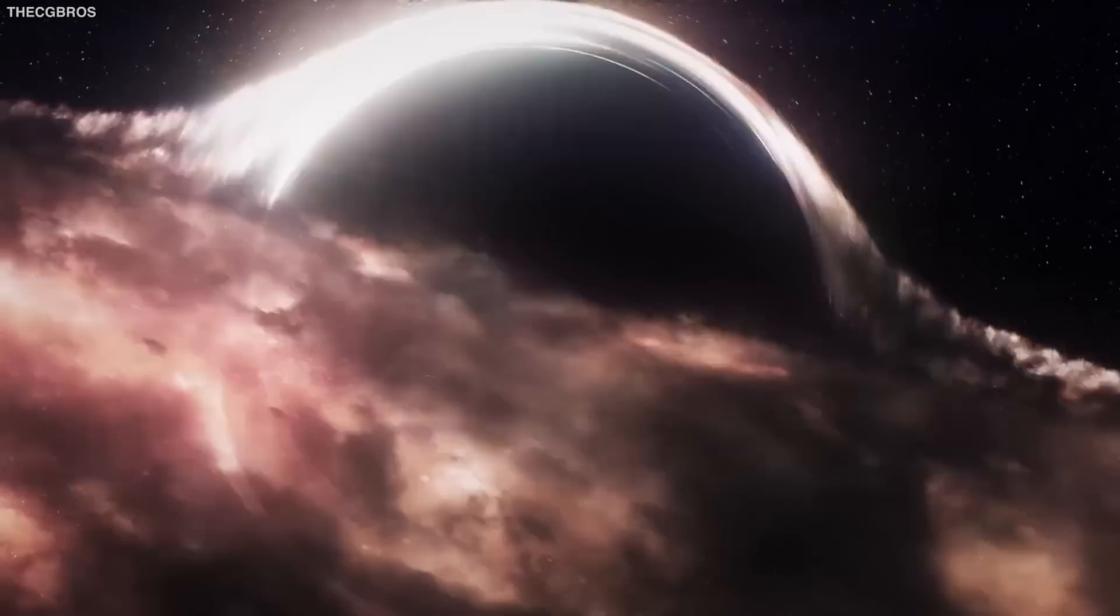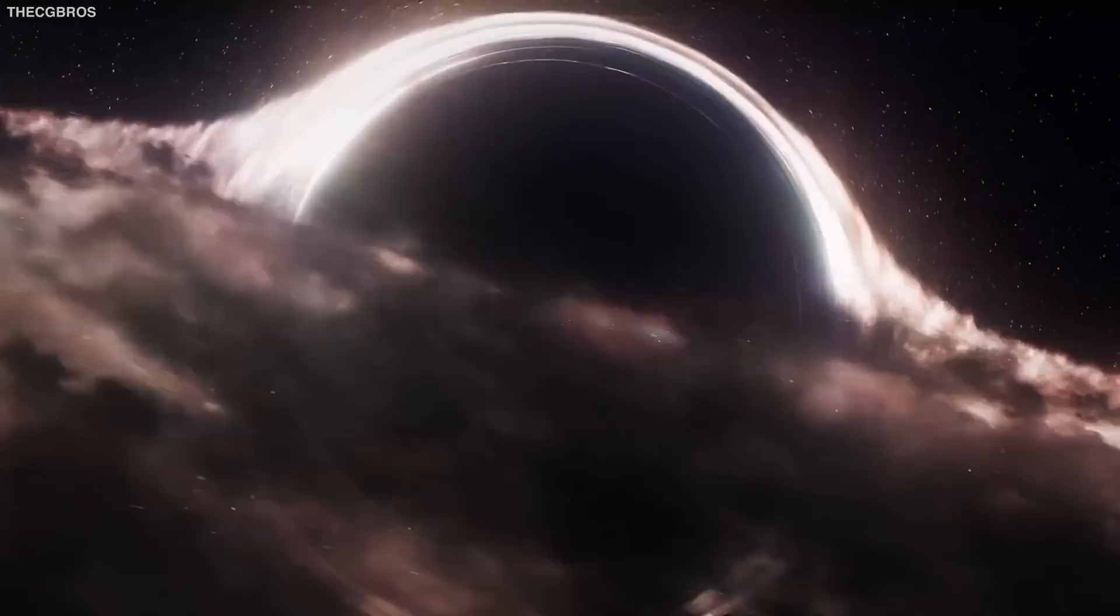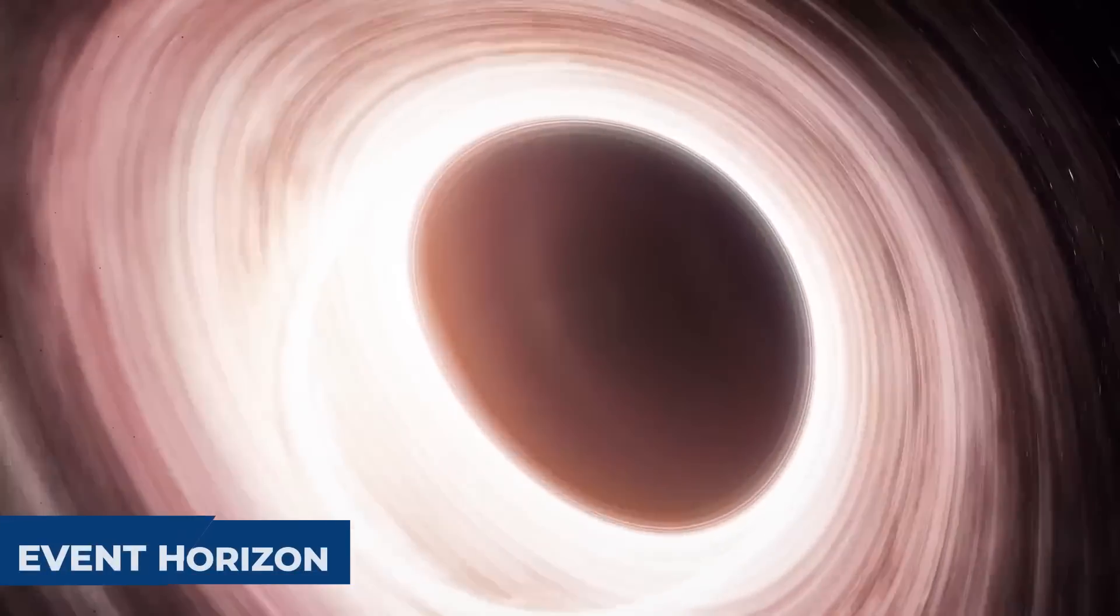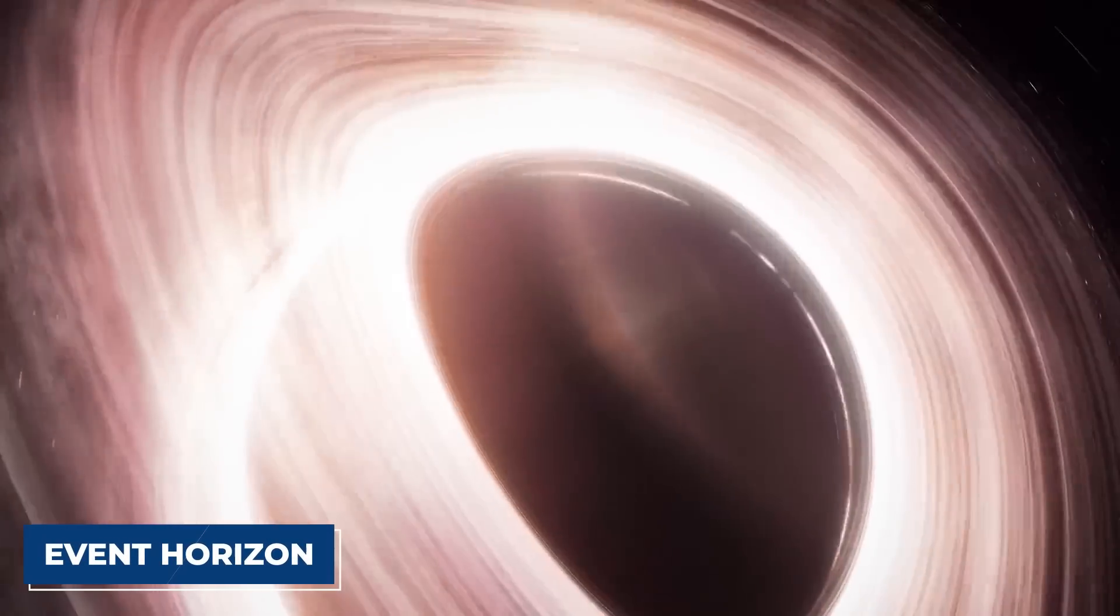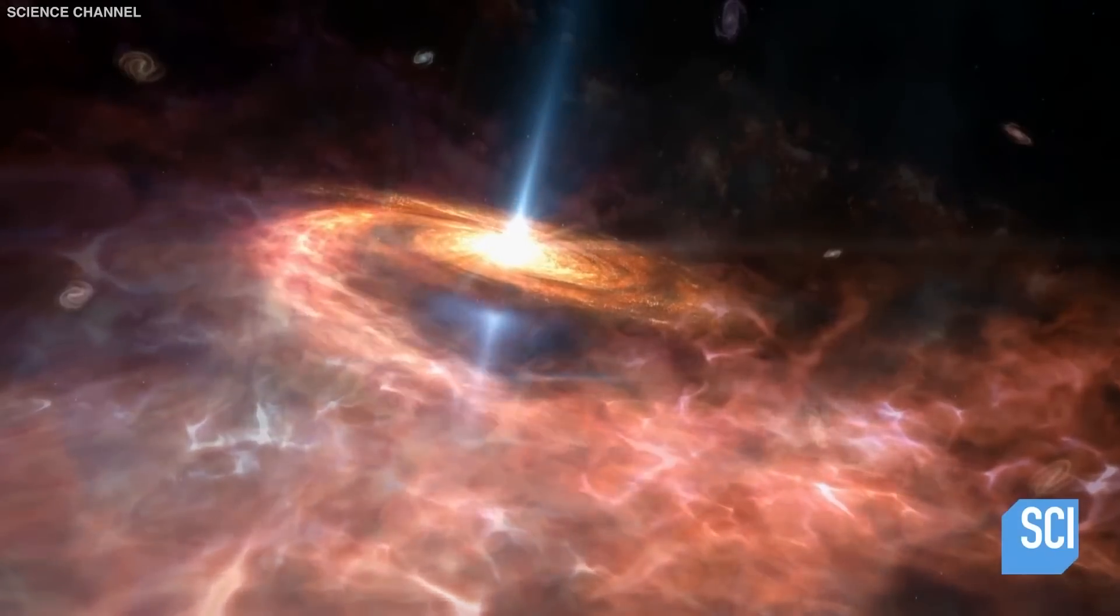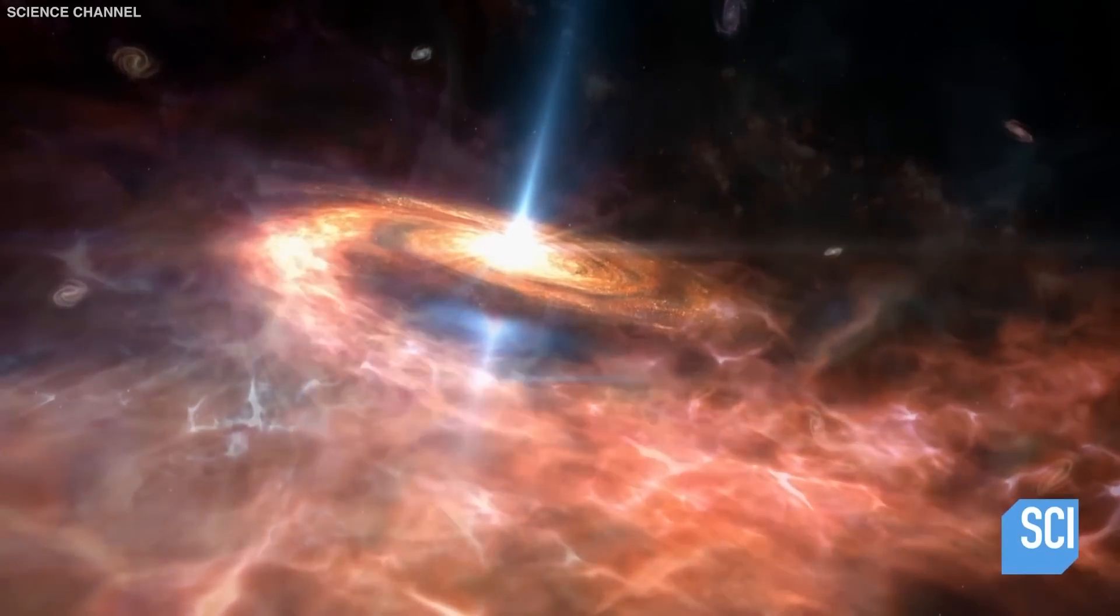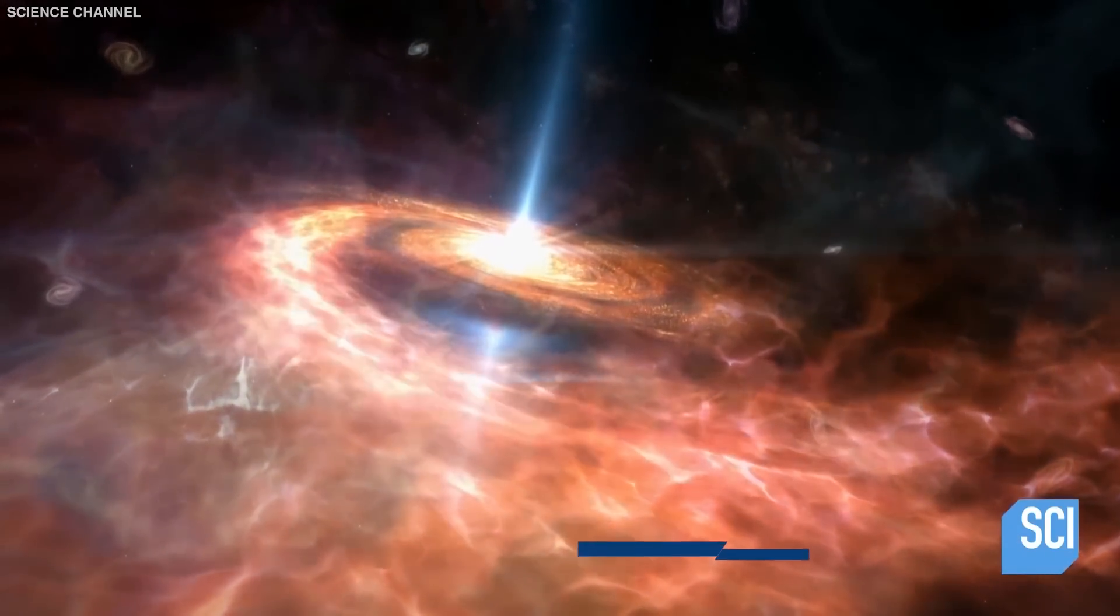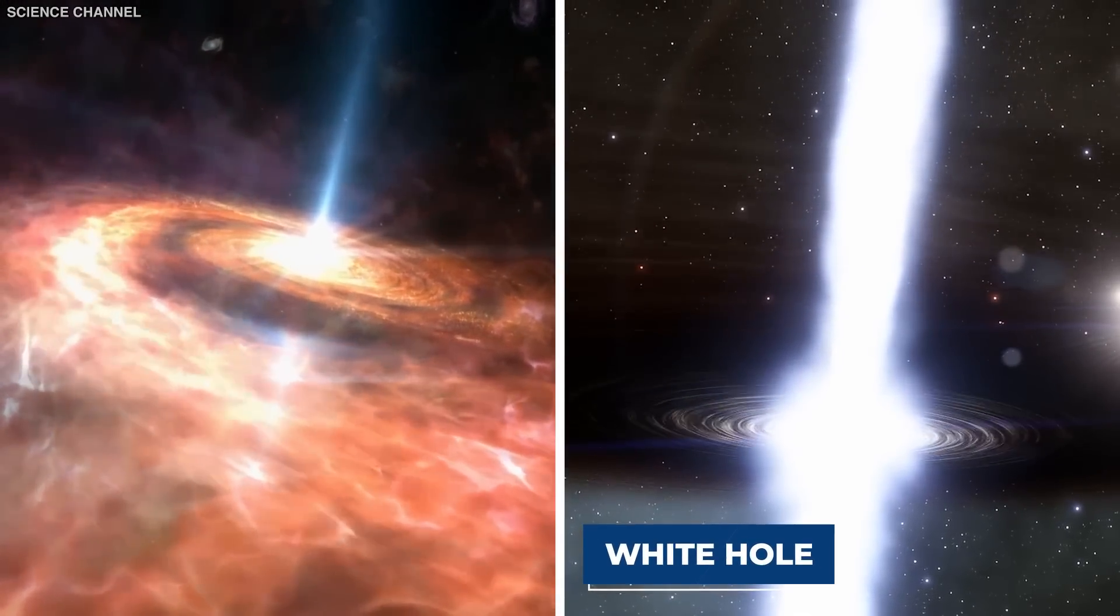A black hole consists of a singularity, or a point of infinite density, coupled with an event horizon, a region surrounding that singularity, beyond which no object can escape. According to the physics of the universe, they found that they could extend the solution to include the polar opposite of black holes, white holes.